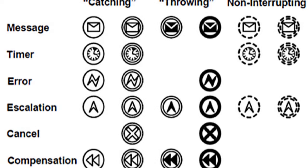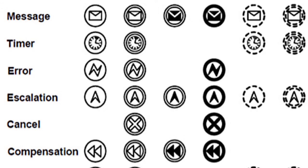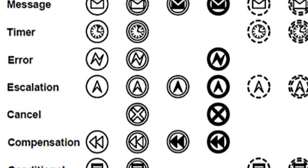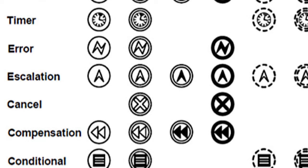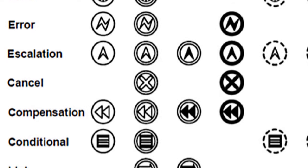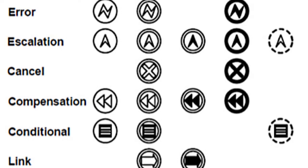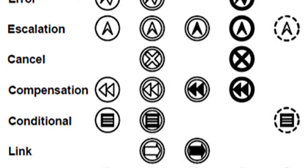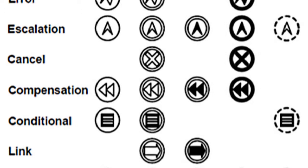An event is represented with a circle and denotes something that happens, compared with an activity which is something that is done. Icons within the circle denote the type of event — for instance, an envelope representing a message or a clock representing time. Events are also classified as catching, for instance if catching an incoming message starts a process, or throwing, such as throwing a completion message when a process ends.